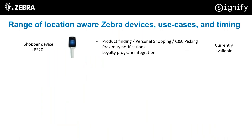The target device really is the PS20 for personal shopping - that's where we see the biggest value. Applications include product finding, tracking of the device through the store so a retailer can know exactly which route the device follows, measuring dwell times at various points in the store, proximity notifications, and promotions - for example, if a shopper is near the pasta aisle you can trigger a promotion for pasta sauce. You can also do loyalty program integration.